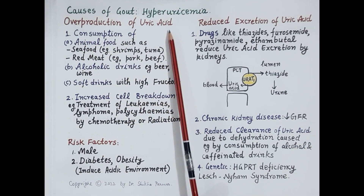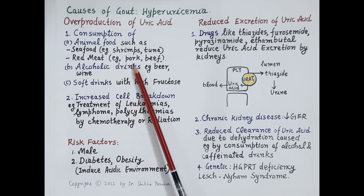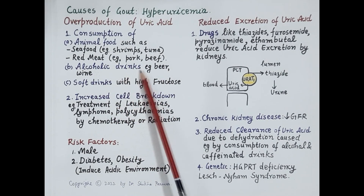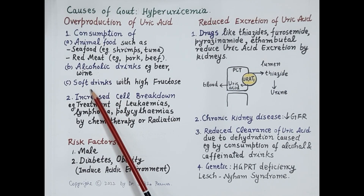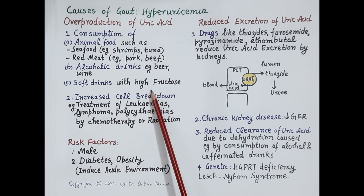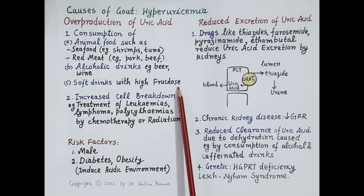Overproduction of uric acid is caused by consumption of a purine-rich diet, including seafood like shrimps and tuna, red meat like pork and beef, and alcoholic drinks like beer and wine. Alcohol causes dehydration, which precipitates formation of monosodium urate crystals. Consumption of soft drinks high in fructose — such as colas and corn syrups — also stimulates increased uric acid production, because fructose metabolism requires ATP, converting it to AMP, and when AMP is metabolized, uric acid is produced.